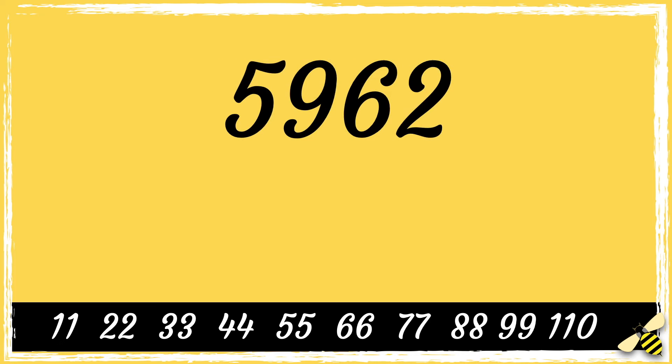So here's 5962. If the difference between the odd and even place digits of the number is divisible by 11, then the whole number will be divisible by 11.